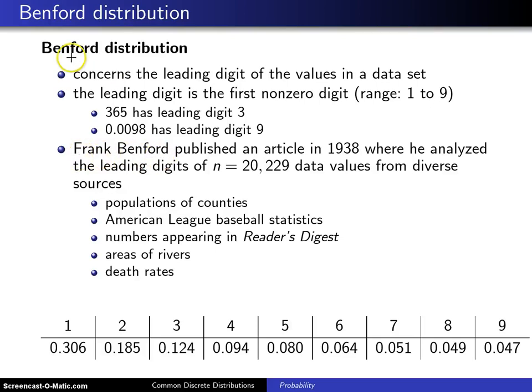Frank Benford was the one that got the credit for having his name on the distribution. He published an article in 1938 where he analyzed 20,229 data values from diverse sources: populations of counties, American League baseball statistics, numbers appearing in Reader's Digest, areas of rivers, death rates, etc.